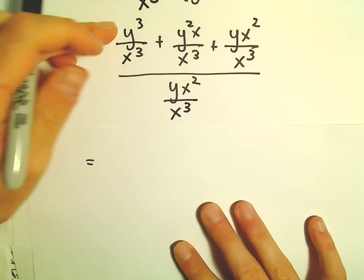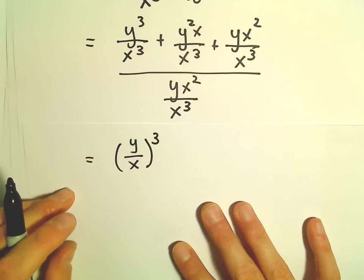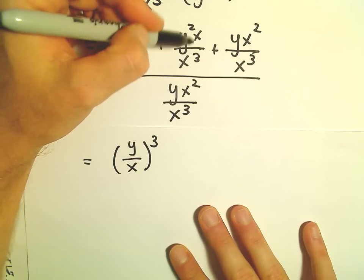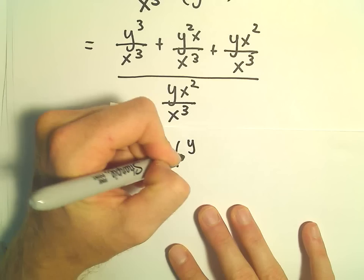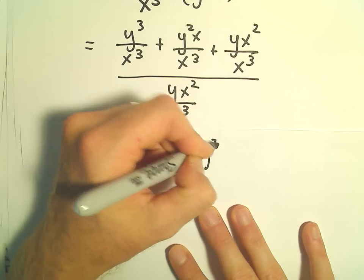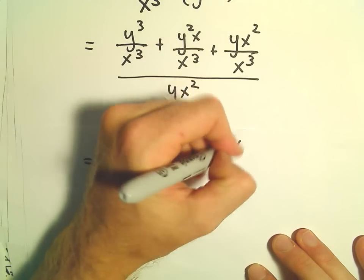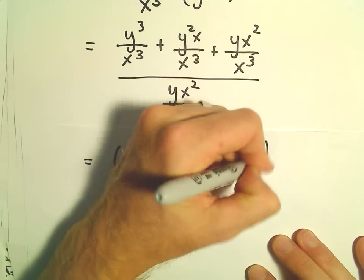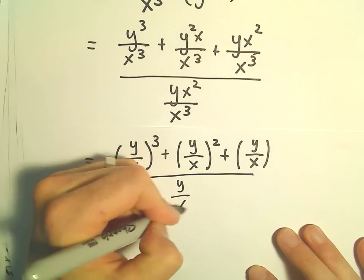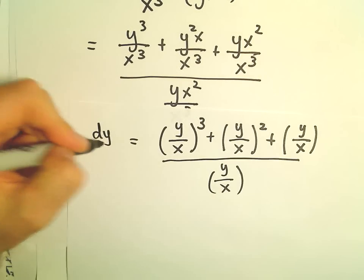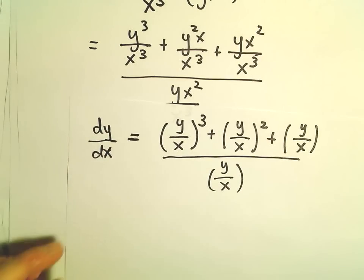I'm going to write the first term as (y/x) all to the third power. Notice we would have y squared over x squared when we cancel the x's, so we can write that as (y/x) squared. Then x squared over x cubed gives just x in the denominator, so we have y over x. And again, the last term is also y over x. So this is our dy/dx — our original differential equation, just rewritten.